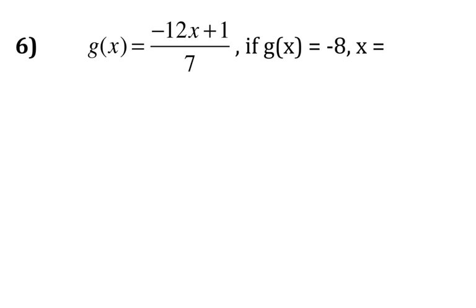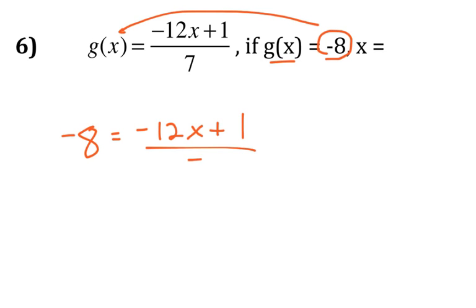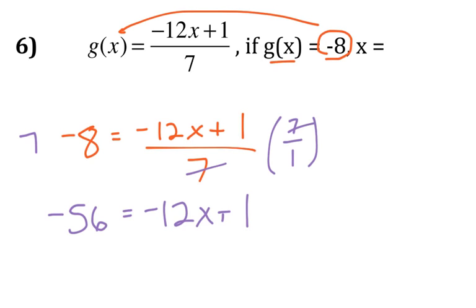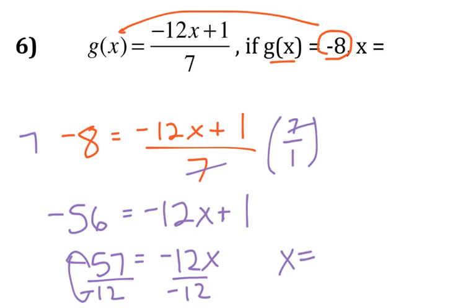Number 6, g(x) is equal to negative 8, so my negative 8 will go in for g(x). So negative 8 is equal to negative 12x plus 1 over 7. So this becomes an equation like what we've seen before. So remember that you're going to multiply both sides by 7 over 1. So I'm going to have negative 56 on the left and negative 12x plus 1 on the right. So I'm going to subtract 1, and then I'll divide by negative 12. And so then that just tells me that x is equal to, a negative divided by negative is positive, and 57 over 12.